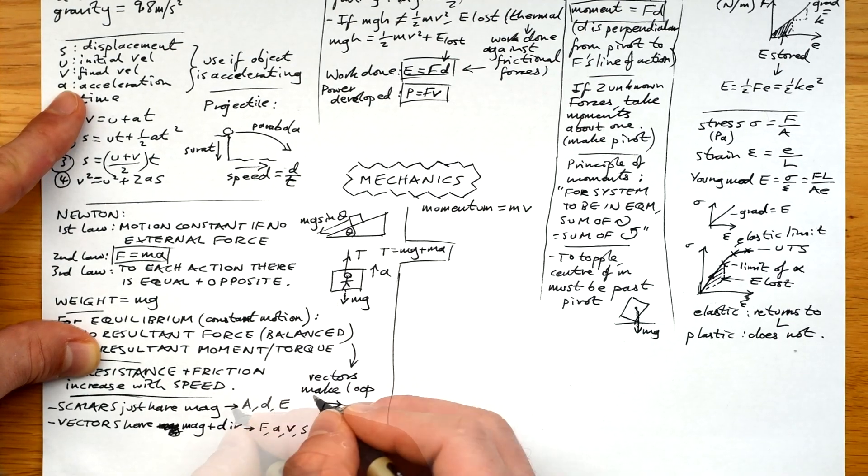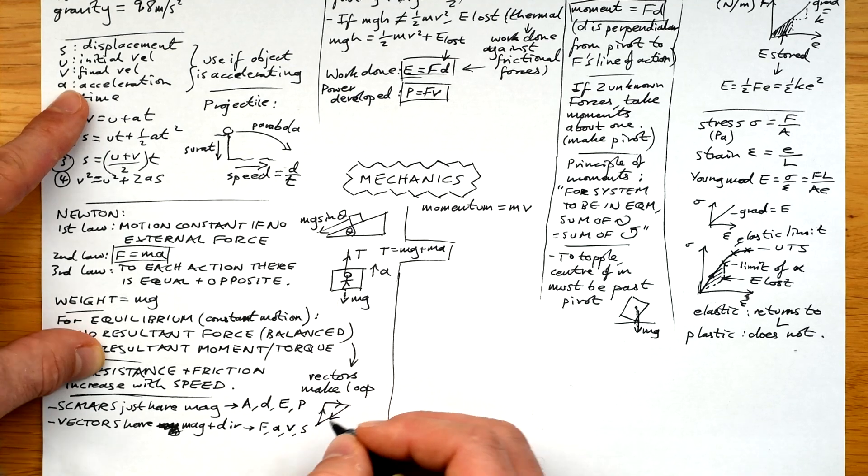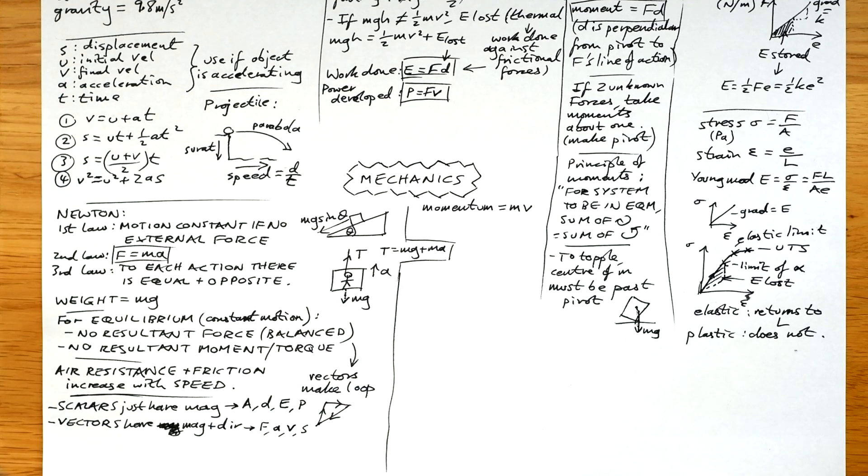Scalars and vectors. Scalars just have magnitude like area, distance, energy, and power, whereas vectors have magnitude and direction like force, acceleration, velocity, and displacement.